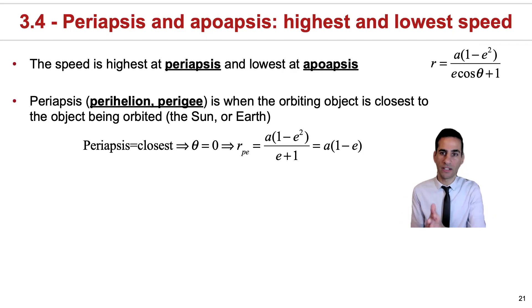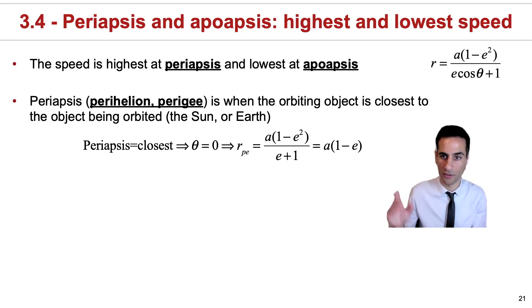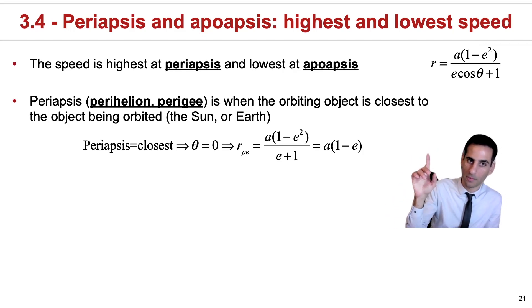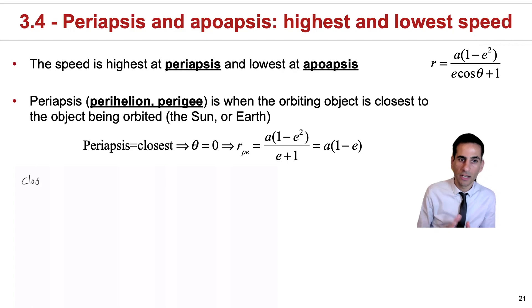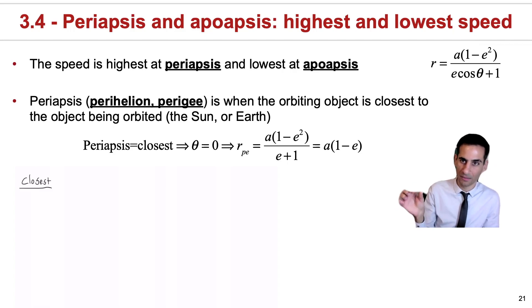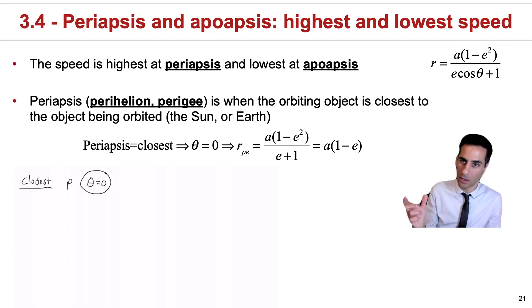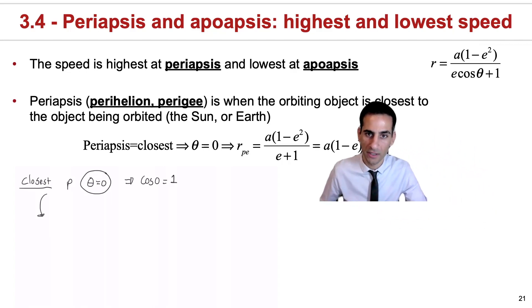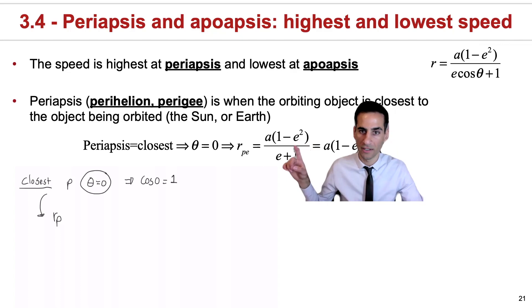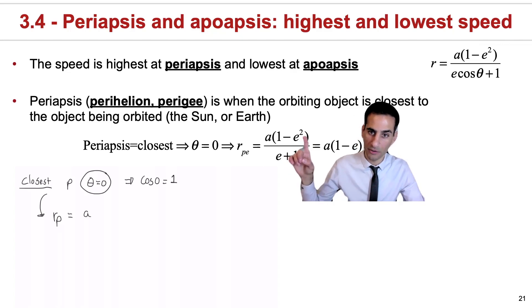A very easy way to do this is if you just take the expression on the top and you realize from the ellipse — go back to the whiteboard video if you have to — that on the closest approach, the angle theta has to be zero. This implies that cos theta becomes one, and you can rewrite this expression very simply, because the term of one minus e to the power of two